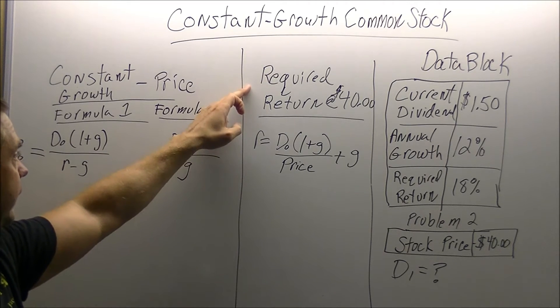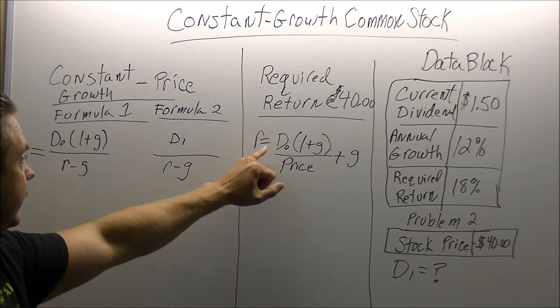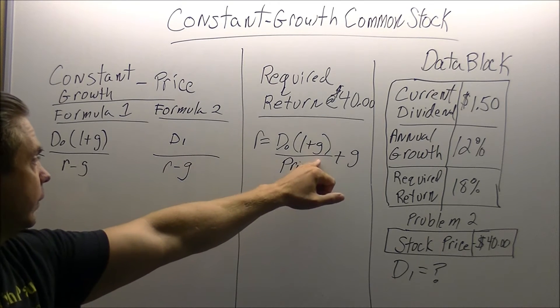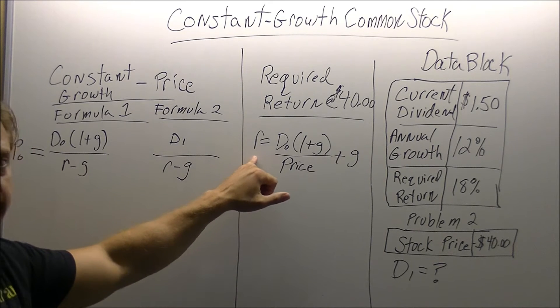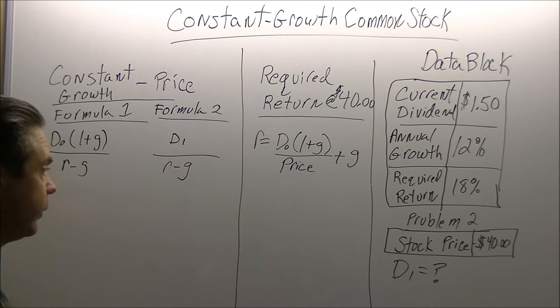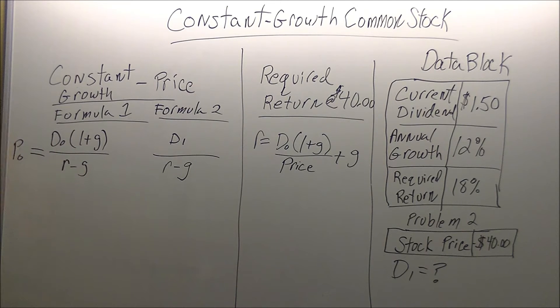For this one, they have to give us the dividend, the growth, and the price, and we solve for required return. So for this first problem, we are going to be solving for the price.